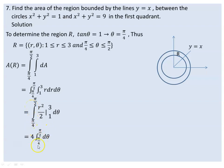So we have 4 times the integral from π/4 to π/2 of dθ. The integral of dθ evaluated from π/4 to π/2 gives π/2 minus π/4, so the area equals 4 times π/4, which is π.